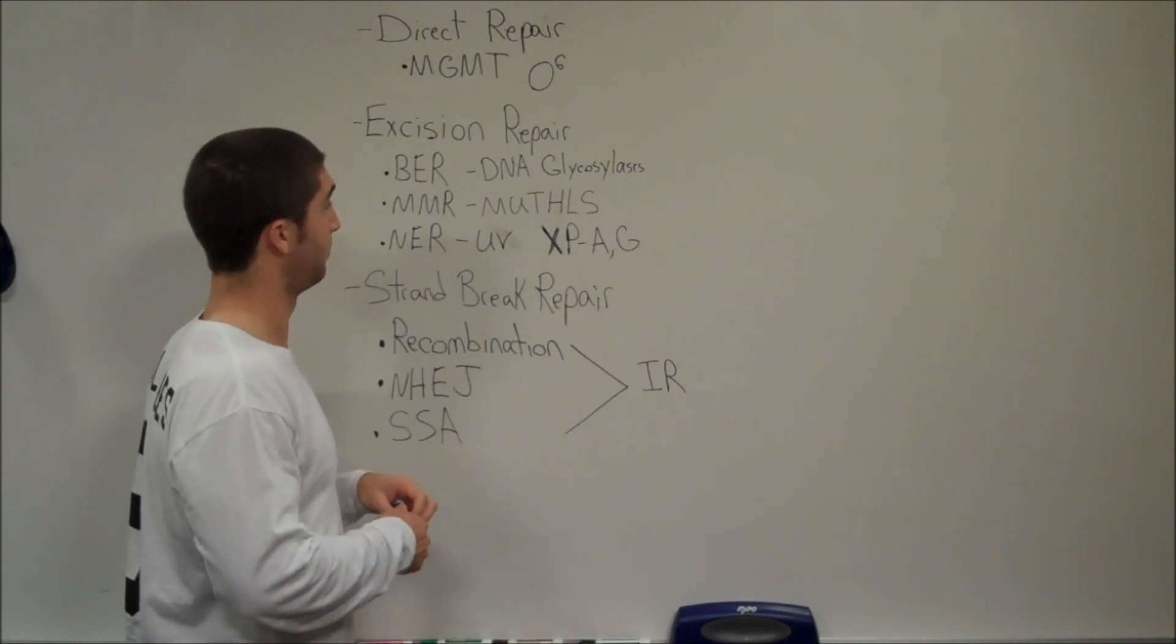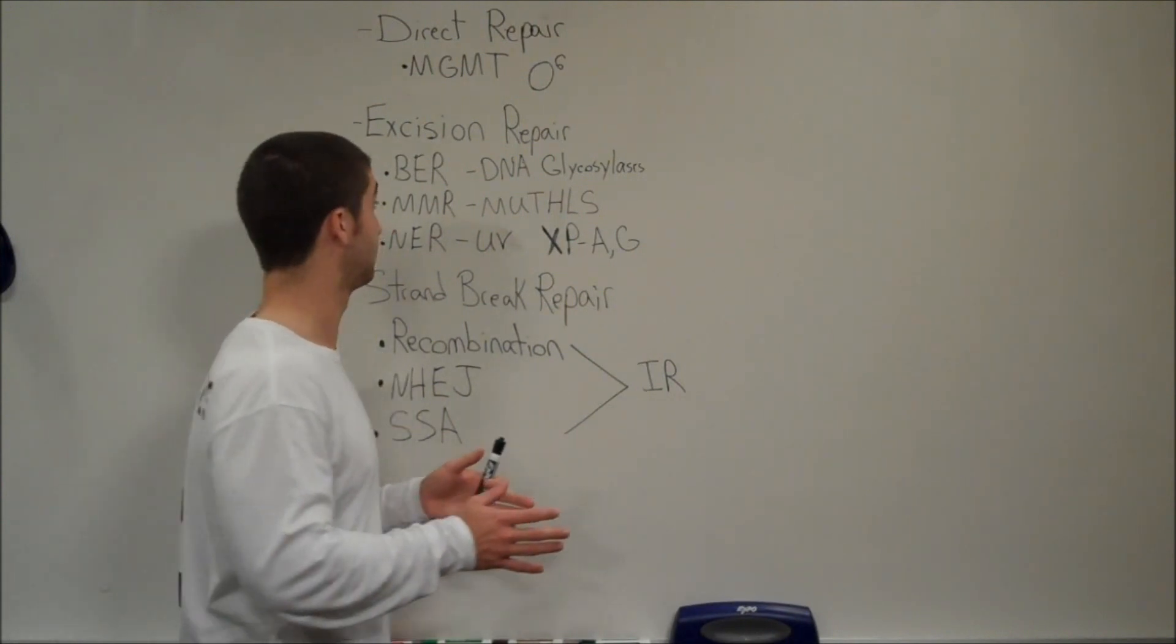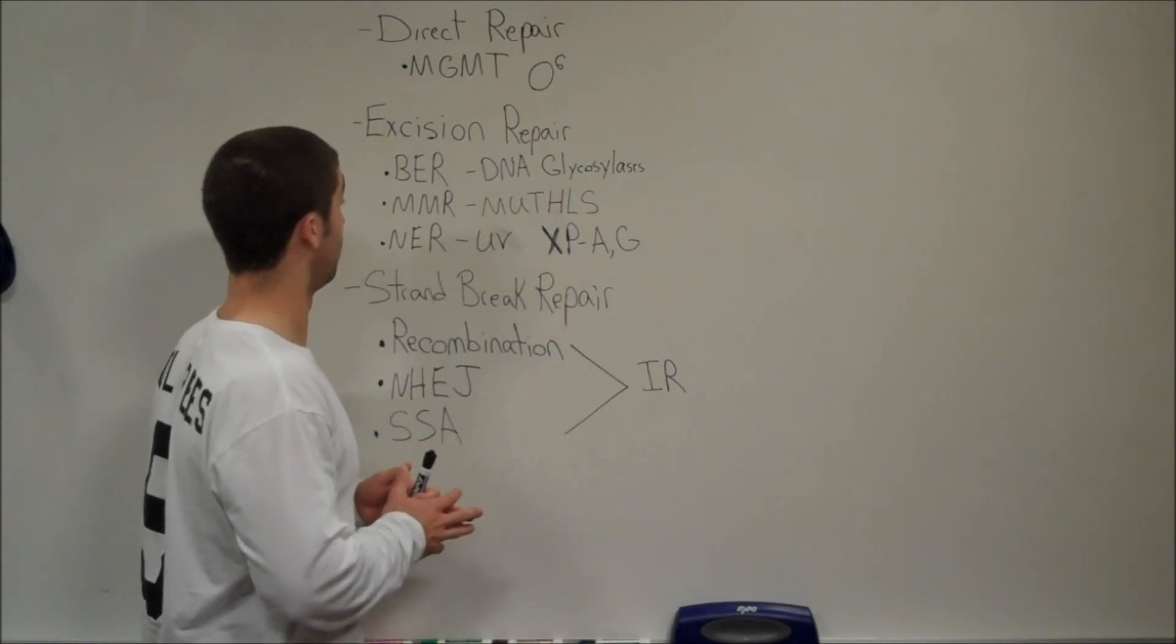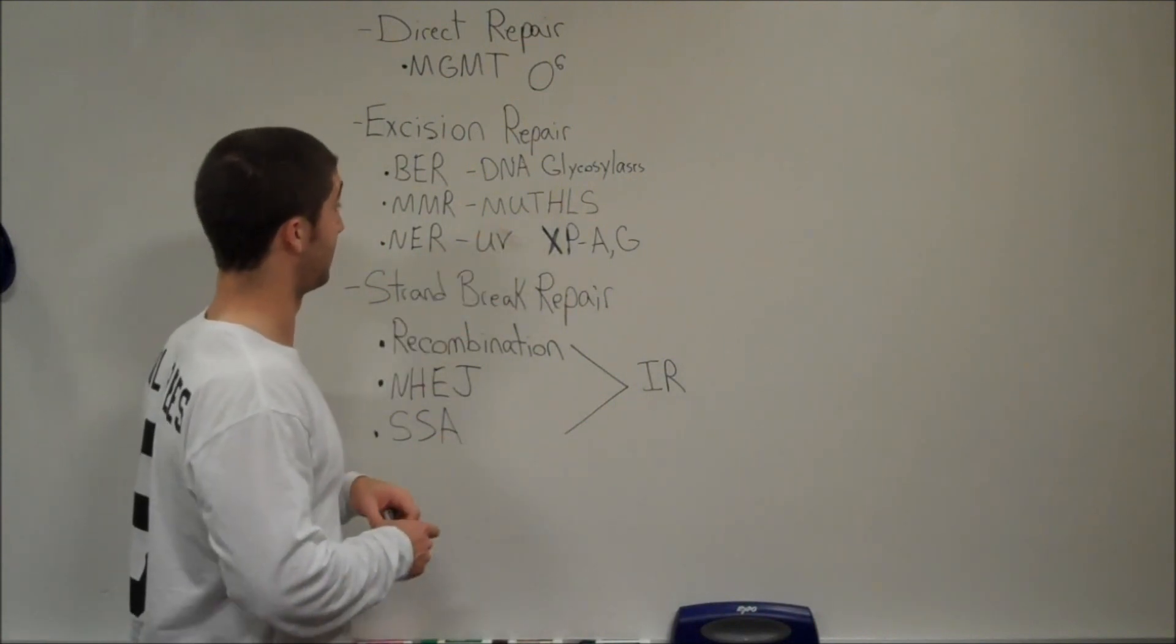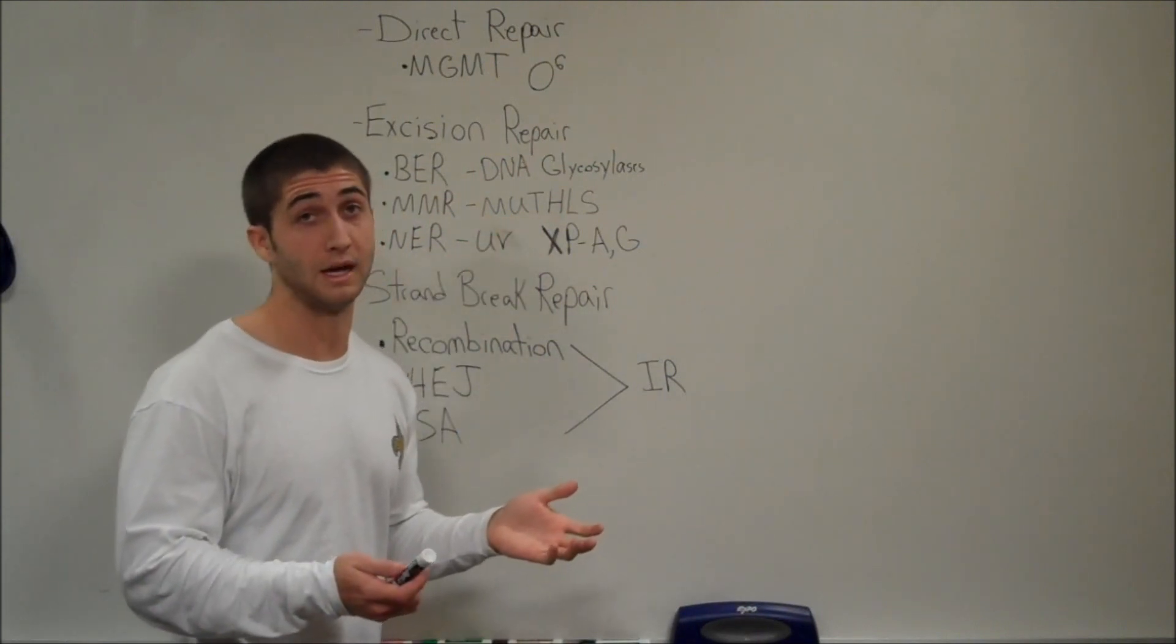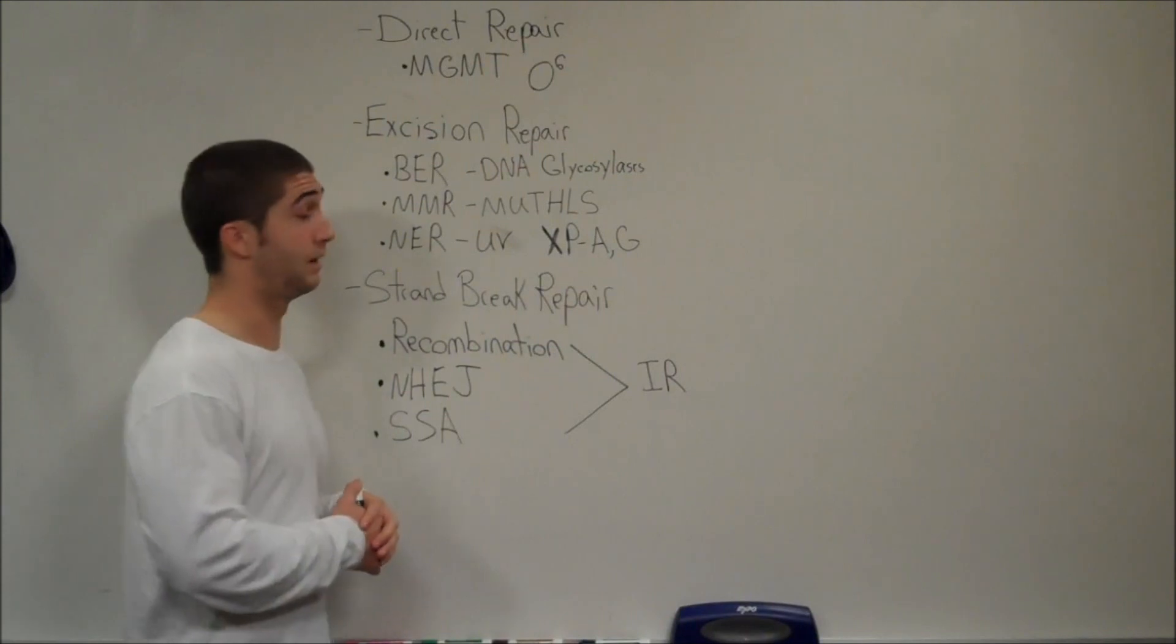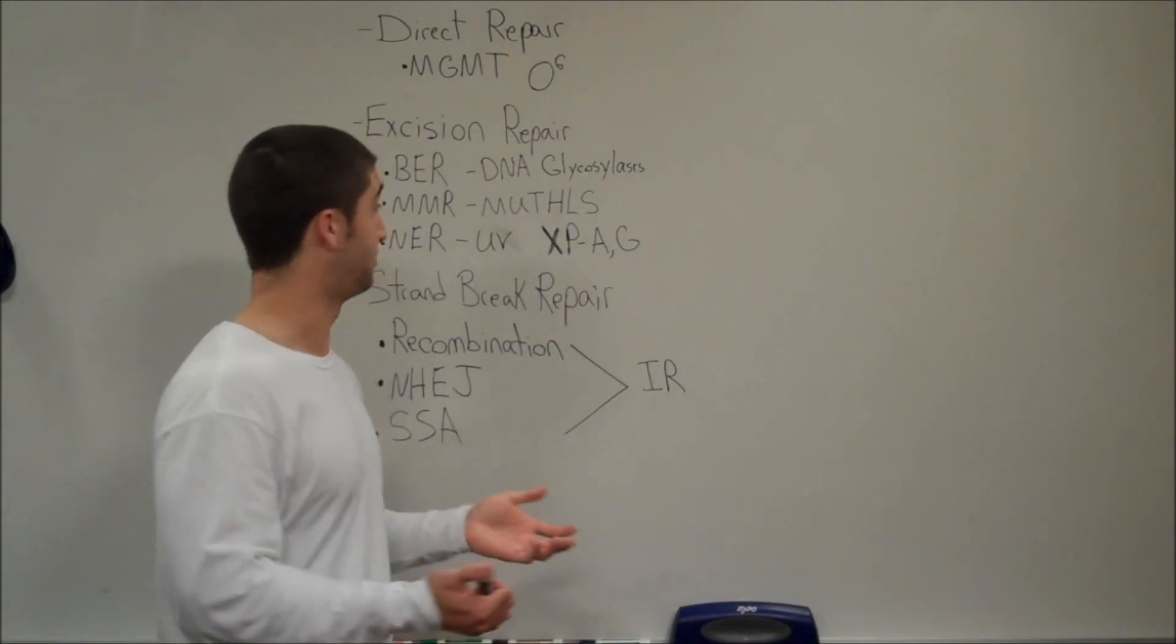But it uses this system called MutHLS system, which is in your notes of how it really works. But the main thing you should know is that that's how mismatch repair pathway is going to go about. It recognizes the damaged DNA, and E. coli uses that mostly in DNA replication errors, like mismatch bases.